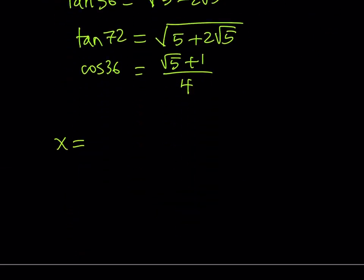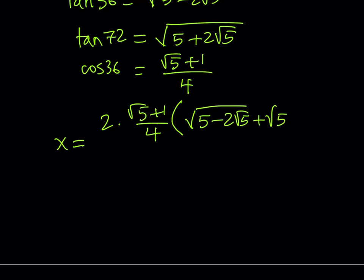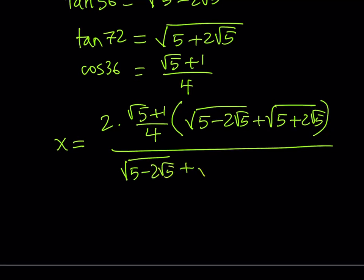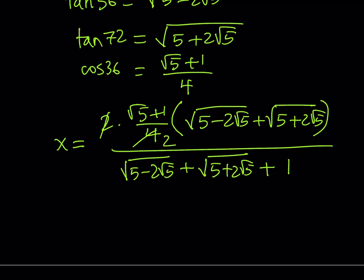So x is going to be 2 times cosine 36 — that's 2 times (root 5 plus 1 over 4) — multiplied by (square root of (5 minus 2 root 5) plus square root of (5 plus 2 root 5)), all over (square root of (5 minus 2 root 5) plus square root of (5 plus 2 root 5) plus 1). You can cross out the 2 and the 4 and put the 2 at the bottom, and that's the final answer for the side length of the square.